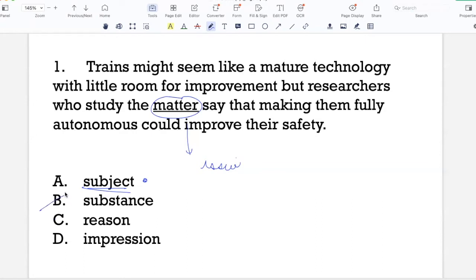Reason is the cause of something. What's the reason behind this? So that also doesn't make sense here. And impression is used to say, for example, my impression of him, which is to say what I think of him. So that also doesn't fit. So the right answer is A.